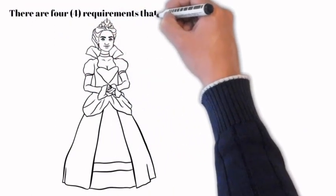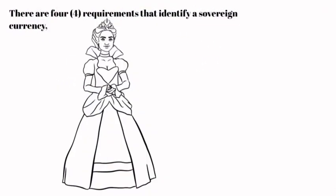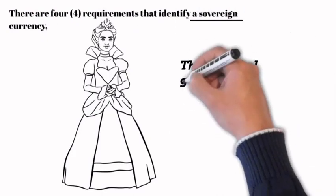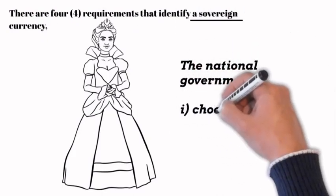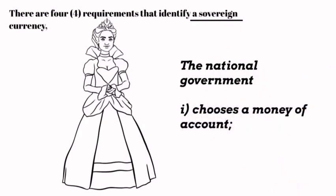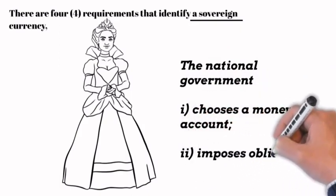There are four requirements that identify a sovereign currency. The national government: 1. chooses a money unit of account. 2. imposes obligations in the money of account.